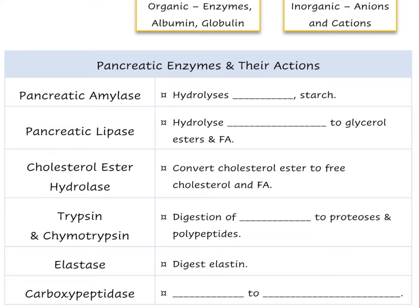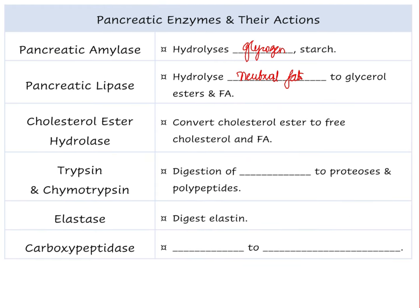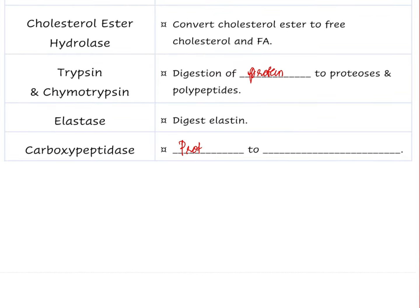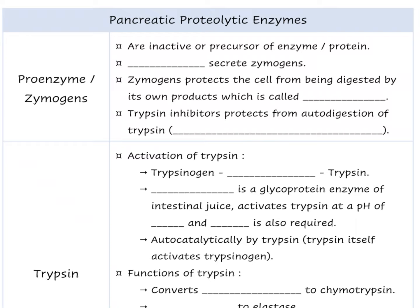Pancreatic amylase hydrolyzes glycogen and starch into dextrin and maltose. Pancreatic lipase hydrolyzes neutral fats into glycerol esters and fatty acids. Cholesterol esterase converts cholesterol esters to cholesterol and fatty acids. Trypsin and chymotrypsin digest larger proteins into polypeptides. Elastase digests elastin. Carboxypeptidase converts proteins to amino acids. Most pancreatic proteolytic enzymes are secreted as inactive zymogens to protect the pancreatic cells from autodigestion.